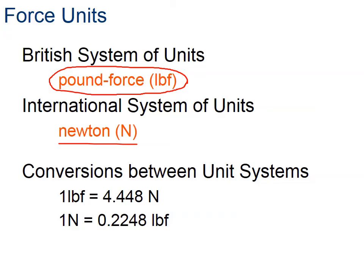Here you see down below the conversion. So one pound is 4.4 Newtons. And you can see the other one.